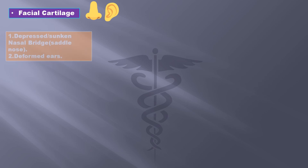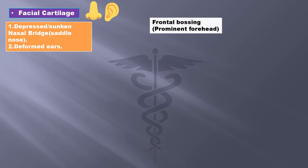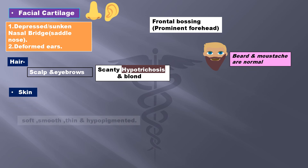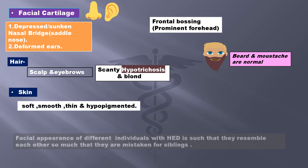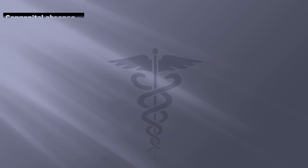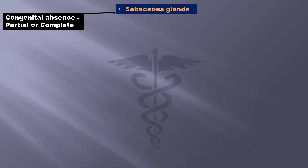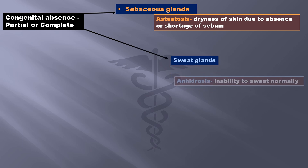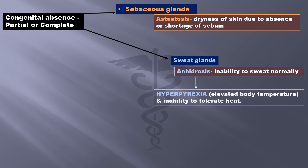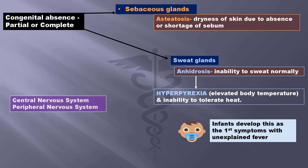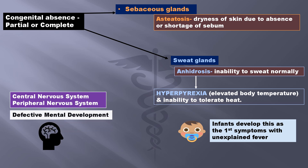Hair on the scalp and eyebrows are scanty. When the hair on the scalp is scanty it's called hypotrichosis, but beard and moustache tend to be normal in appearance. The skin is soft, smooth, thin, and hypopigmented. Facial appearance of different individuals with HED is such that they look like each other and are mistaken for siblings. Partial or complete congenital absence of sebaceous glands leads to xeroderma, which is dryness of skin due to lack or shortage of sebum. This can also cause anhydrosis, that is inability to sweat normally, which leads to elevated body temperature — hyperpyrexia. These individuals also have an inability to tolerate heat. In infants this develops as the first symptom with unexplained fever. Involvement of central and peripheral nervous systems may cause defective mental development.